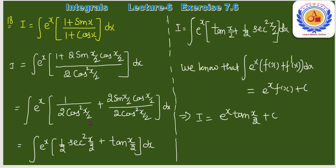यह eˣ·[f(x) + f'(x)] form है जहाँ f(x) = tan(x/2) और f'(x) = (1/2)sec²(x/2)। Final answer: eˣ·tan(x/2) + C।